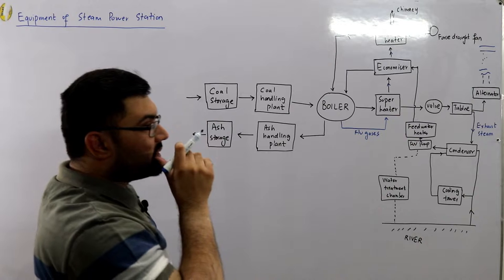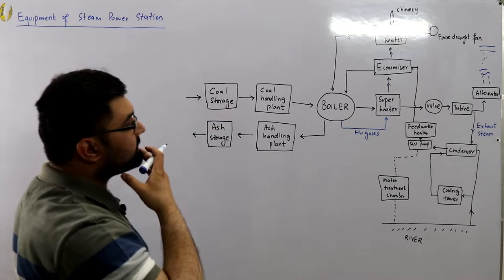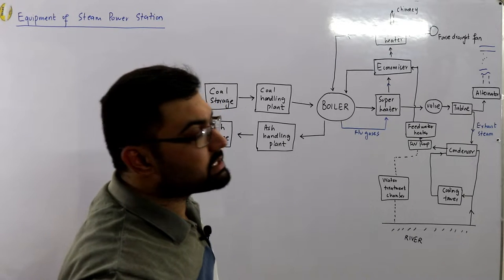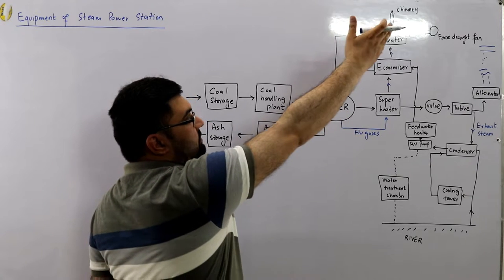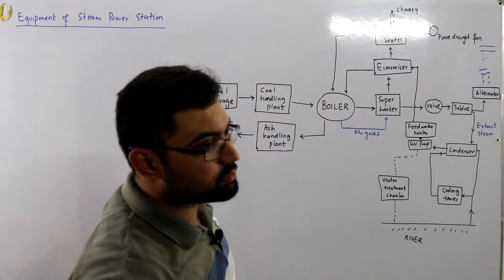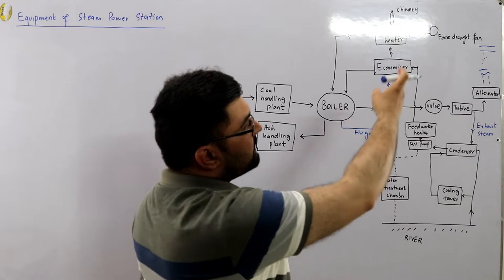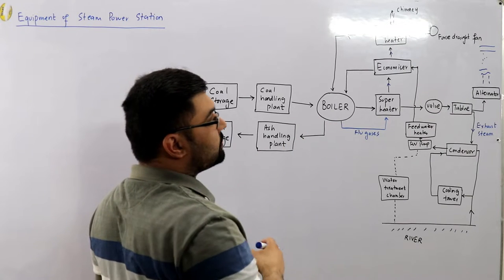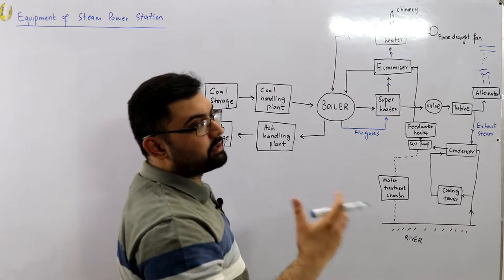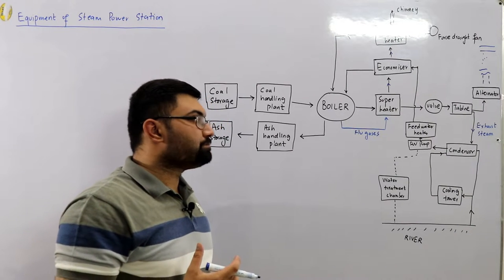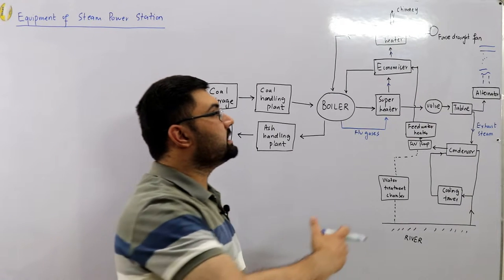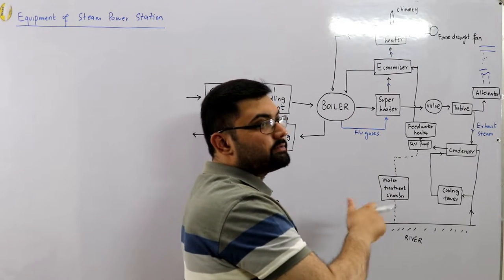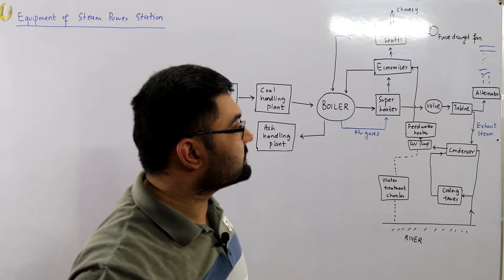The whole setup works as follows: coal is stored in the coal storage, then given to the coal handling plant where it is crushed into small pieces. In the furnace it is combusted with oxygen, which is provided via the air preheater — the air preheater heats the air by extracting heat from the flue gases formed during combustion. The boiler converts water into steam; the superheater further elevates the steam temperature. The flue gases also pass through the economizer, which extracts further heat.